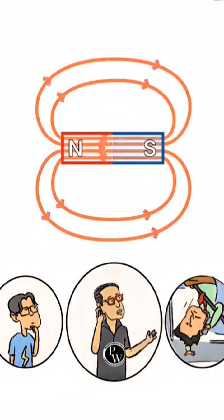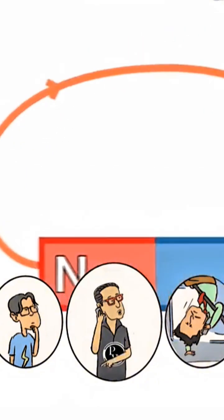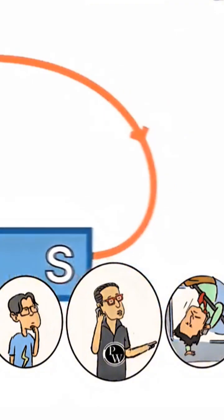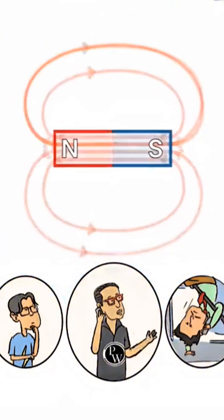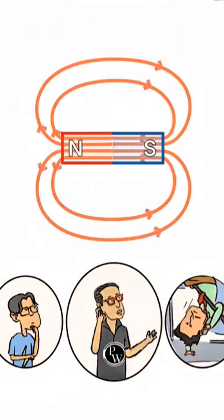A magnetic field always exists in a continuous loop around any magnet. Outside the magnet, it flows from the north pole to the south pole. Inside the magnet, spanning steadily from the south pole all the way to the north, there's absolutely no starting or ending point. It's truly continuous in an endless unbroken loop.